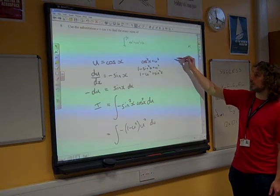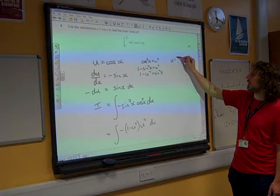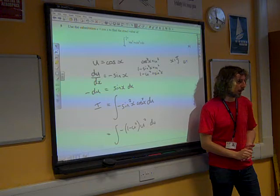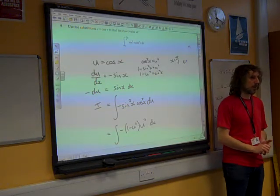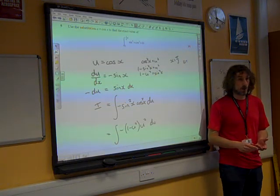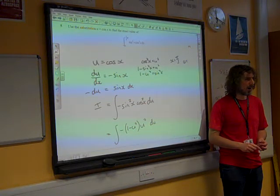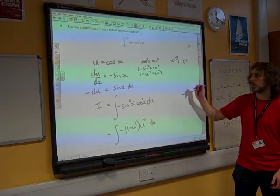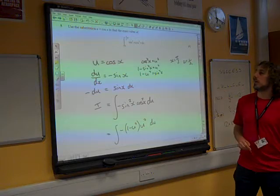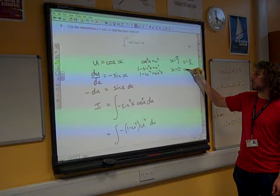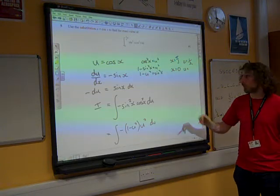If x equals a third of pi, then u is the cosine of pi by 3. And you can do it in calculator. Cos of pi by 3 is a half, isn't it? And if x equals 0, cos of 0 is 1.